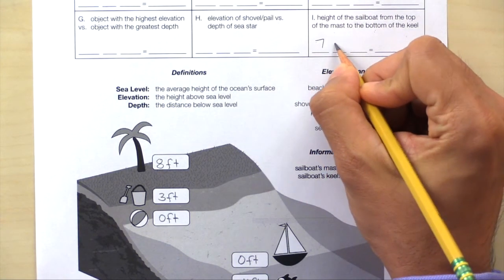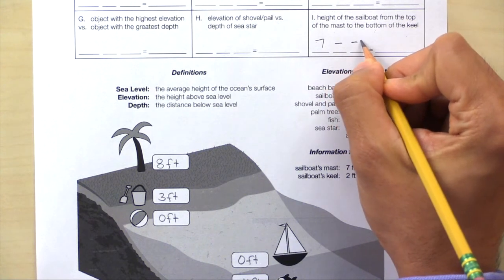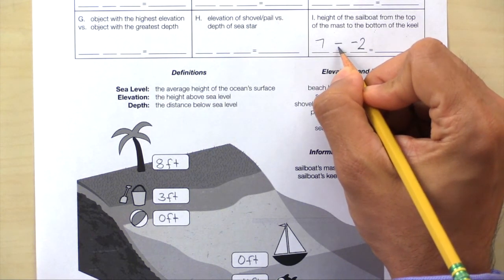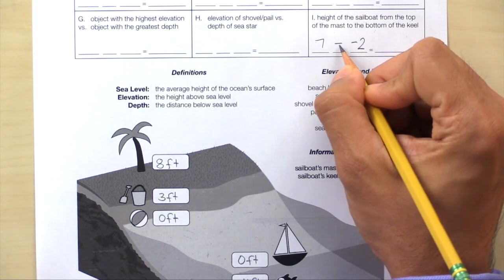Here's 7 minus negative 2. We're finding the difference. Don't subtract integers. Use two strokes to add the opposite.